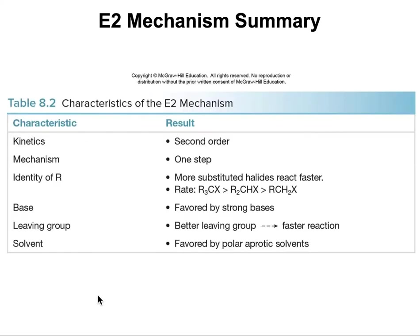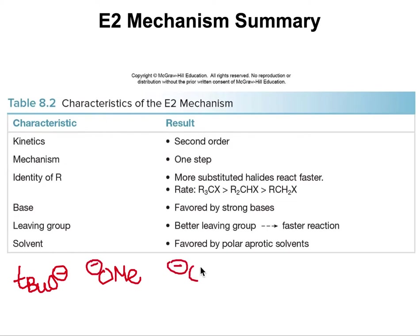In summary: an E2 reaction is a second-order reaction that happens in one step, and the more substituted the alkyl halide, the faster it will happen. E2 is favored by strong bases such as methoxide, tert-butoxide, and DBU. The better the leaving group, the faster the reaction, and it is also favored by polar aprotic solvents.